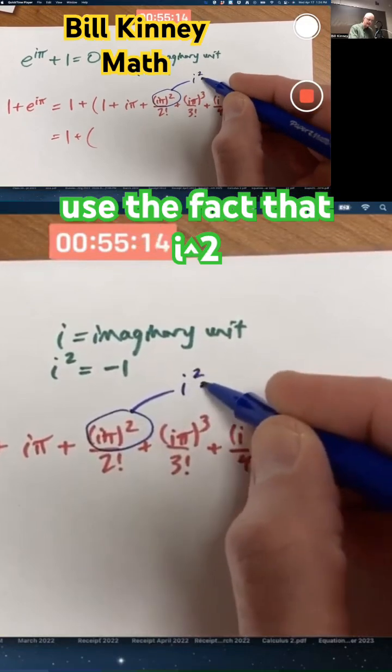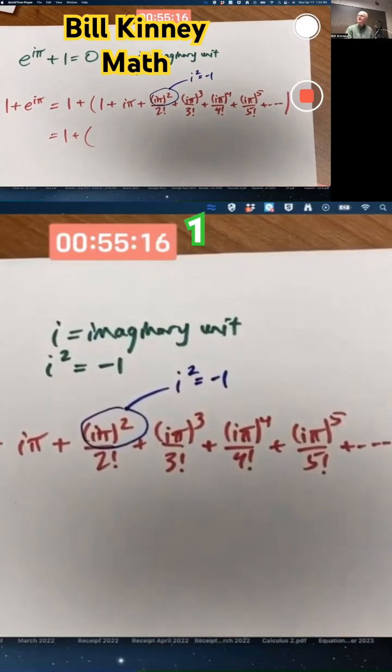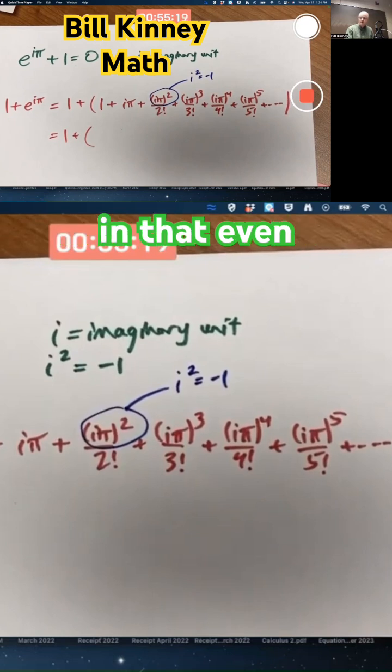In this one, we'll use the fact that i squared is negative 1 to get rid of the i in that even power.